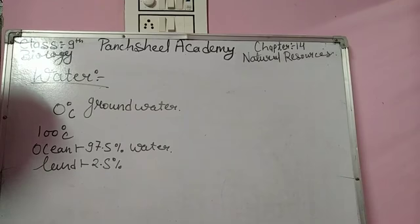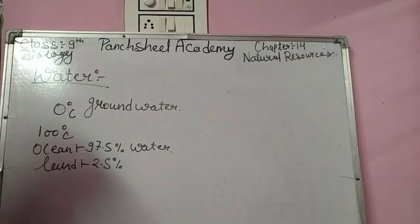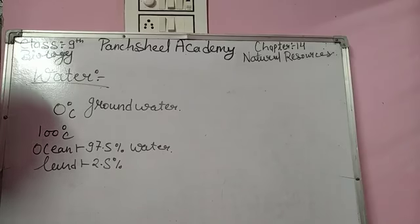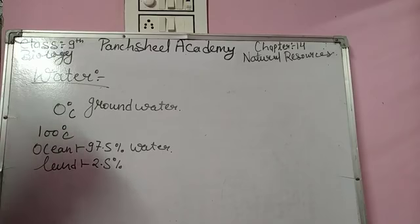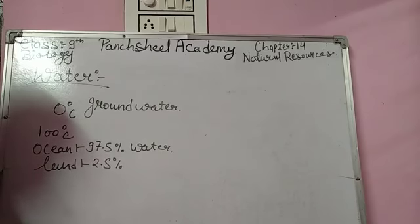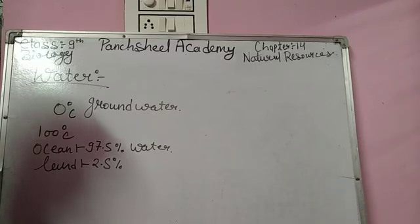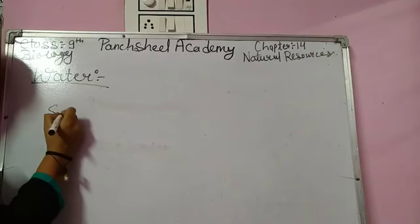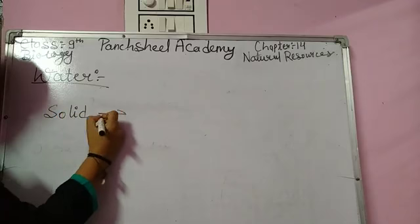Terrestrial life — life on Earth — ke liye water bahut important hota hai. Without water, kisi bhi living organism ka Earth pe survive karna possible nahi hai. Generally, Earth pe water exist karta hai tabhi Earth pe living organisms ka survival possible hai. Water ki teen stages hoti hain.